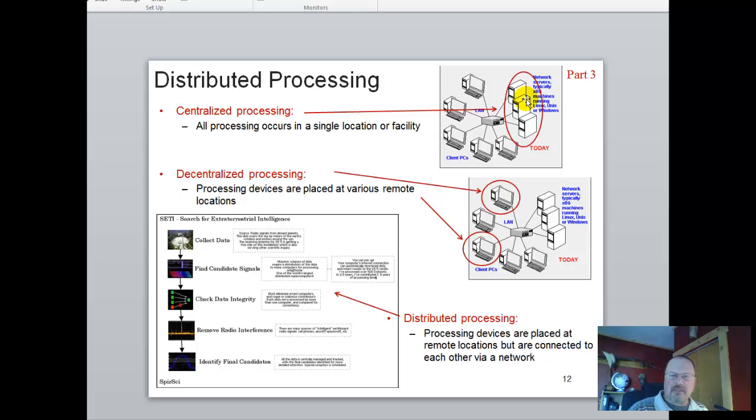Now, with decentralized processing, what we have is each one of these machines basically handles the part of the processing. So processing devices are placed at various remote locations. And they may not necessarily tie together in any way, shape, or form. This is like using Word here, using Microsoft Excel here, and Microsoft Access here. So keep that in mind. That's decentralized processing. There's no processing off of the server.